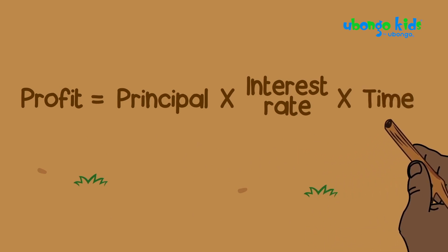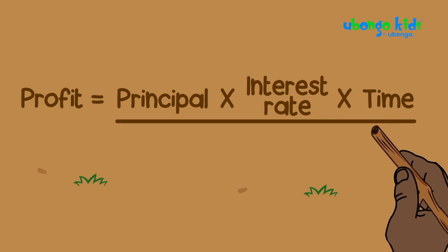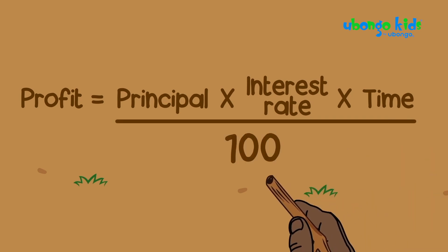Then, by the time you're investing your money for. Time can be the number of days, weeks, months or years. Once you multiply all three, you divide it by 100 and the answer is the profit you will make.